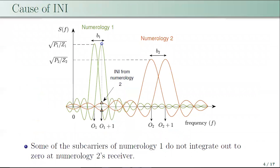The major drawback in mixed numerology OFDM systems is inter-numerology interference. The subcarrier spacing of numerology 2 is twice that of numerology 1. These subcarriers are essentially sinc functions in the frequency domain. At the peak of the sinc function of numerology 1, the other sinc functions in numerology 1 are zero, whereas the sinc functions of numerology 2 are non-zero. This causes loss of orthogonality and is the reason for inter-numerology interference at the receiver of numerology 1.